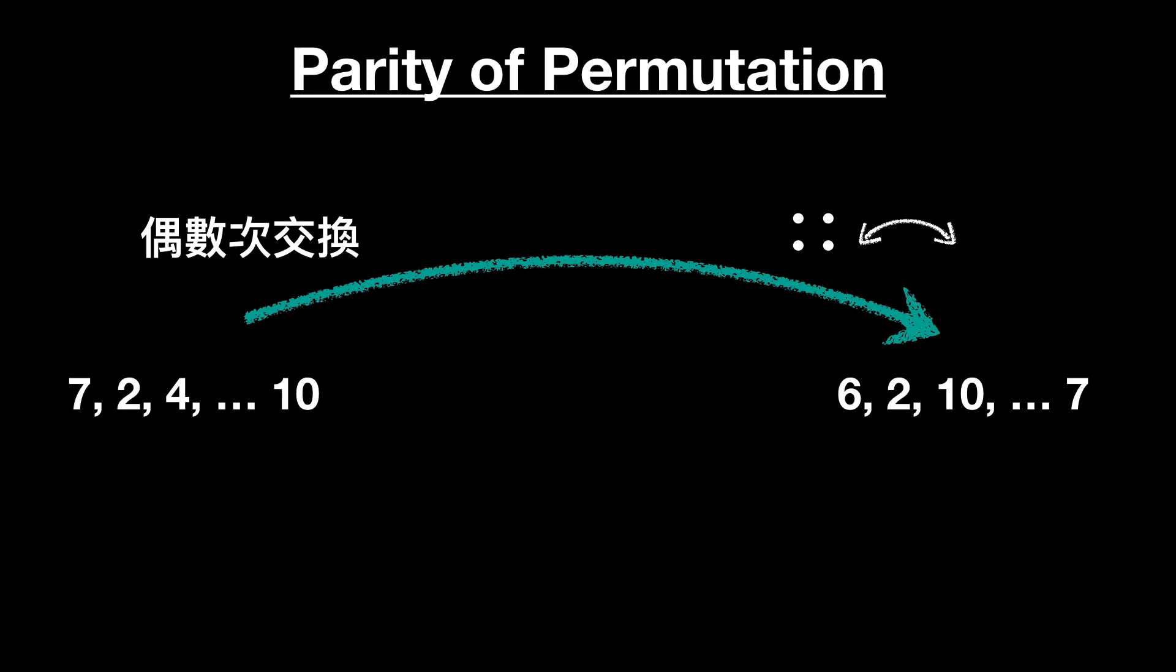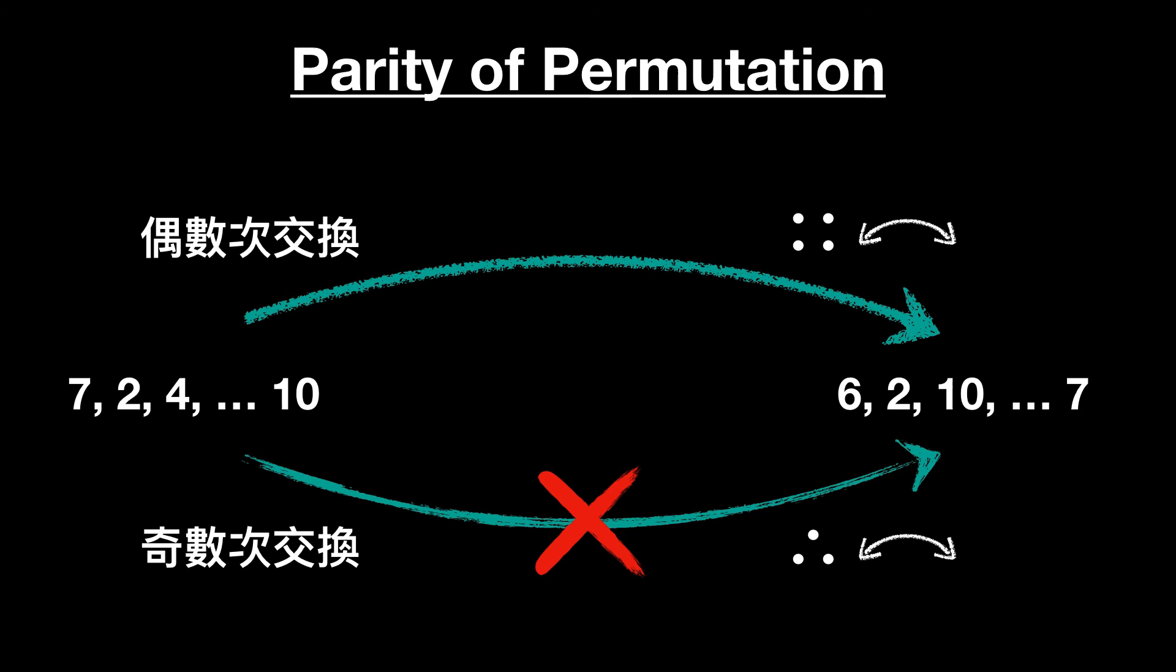For those who are interested, you might want to search parity of permutation. The idea of the rage is actually a proof for any two permutations A and B of a sequence. If there exists an even number of exchanges to transform A to B, then there cannot be an odd number of exchanges to do so. Vice versa.